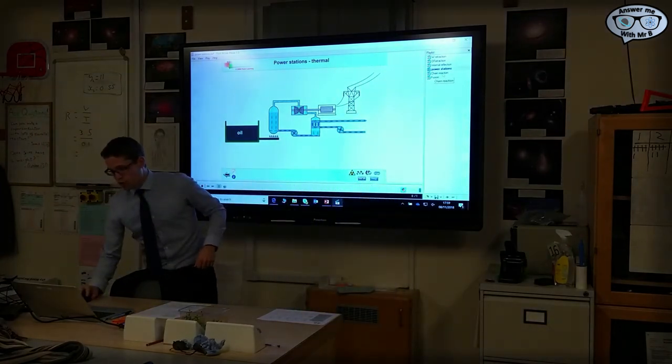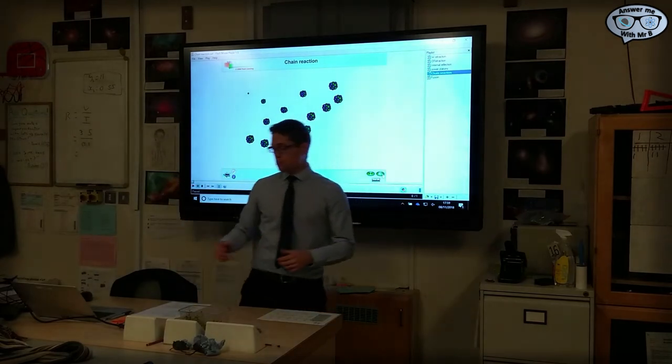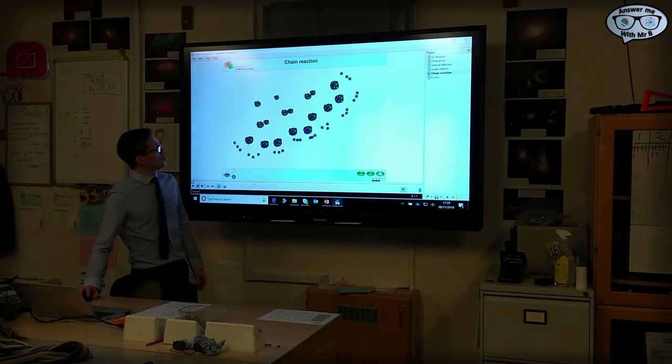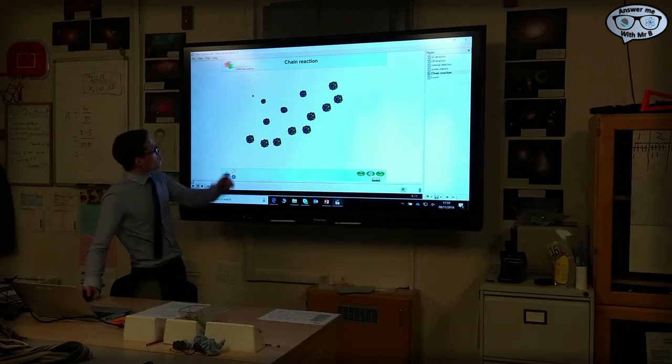And these neutrons, just like the first neutron, can go on to split more nuclei in what we call a chain reaction. Now, if you control this chain reaction, then you're able to generate nuclear power, which is good. If you don't control it, like this, you create a nuclear bomb, which is not so good.